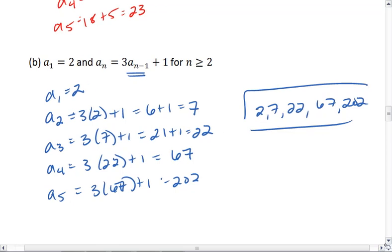So just a quick summary of that last example, I found that my first five terms were 2, 7, 22, 67, 202.